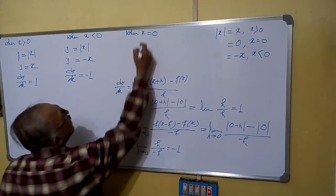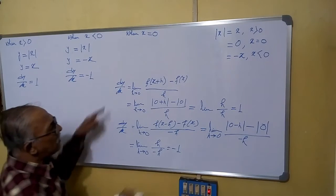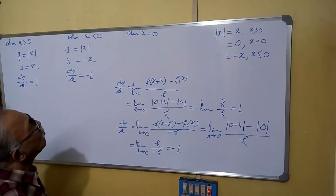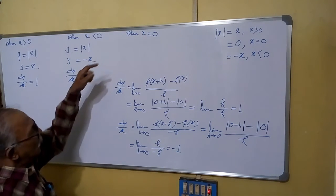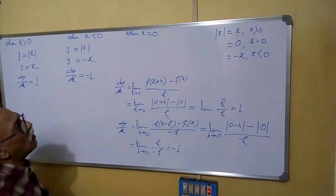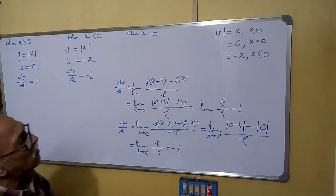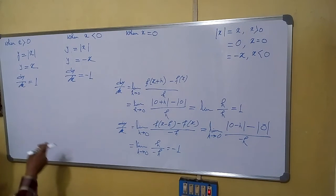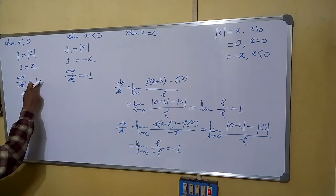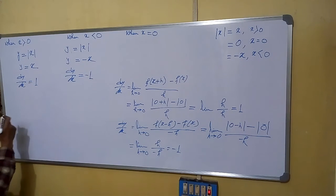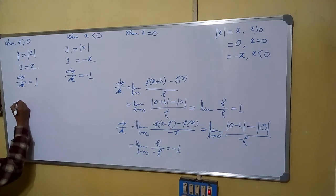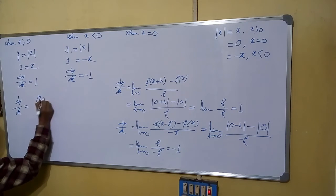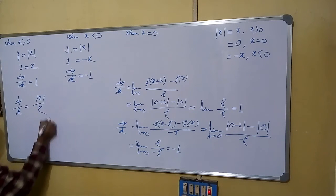So what we are getting at x equals 0: the right-hand derivative is 1 and the left-hand derivative is minus 1. So we say dy/dx does not exist at x equals 0, or y equals mod x is not differentiable at x equals 0. In all other cases, when x is greater than 0, dy/dx is 1, and when x is less than 0, dy/dx is minus 1. So how can we write a common expression? We can write dy/dx equals mod x divided by x.